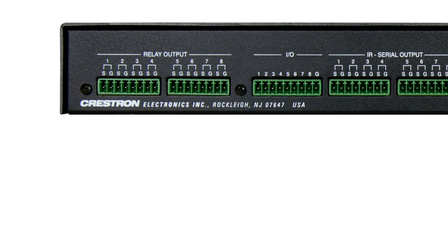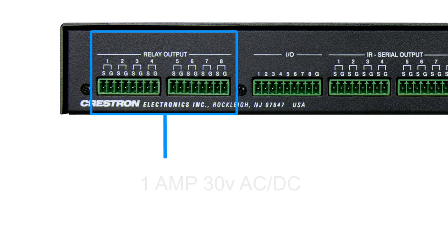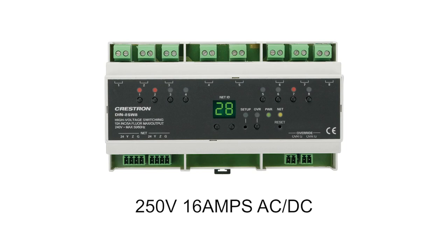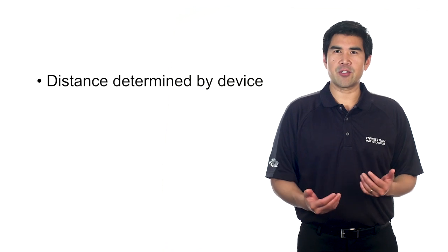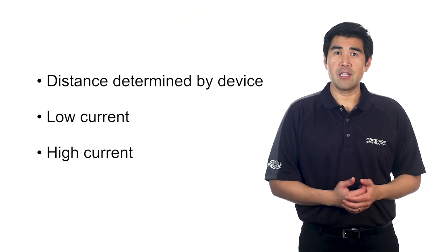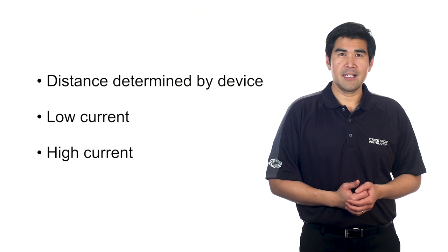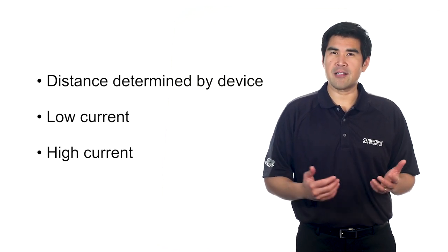The next method to look at are the low-voltage relays. On the CP3, we can see eight relay ports on the very left-hand side. These relays connect directly to the device we wish to control. The relays available on most processors are rated at 1 amp, 30 volt AC/DC. If you need to switch to a higher current voltage, other units are available. The distance is determined by the device — as it's a contact closure, we could be switching very low or high current. Relays can be used for any device that requires a contact closure.